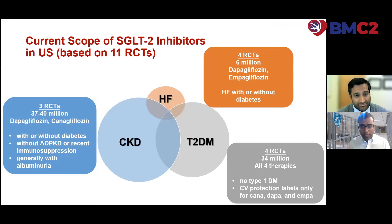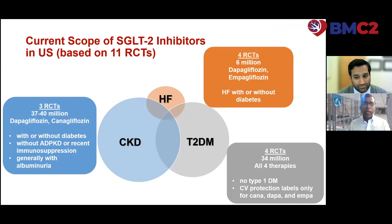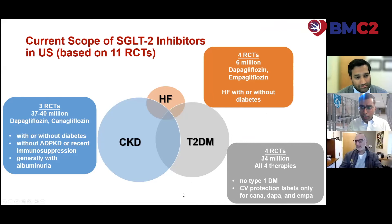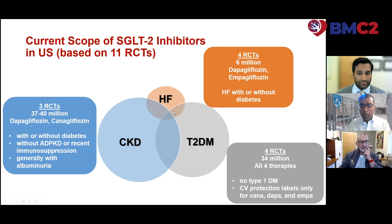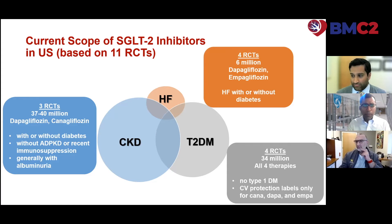This is the current landscape of SGLT2 inhibitors — 11 late-phase clinical trials have been conducted. While we started in type 2 diabetes, encompassing about 34 million Americans, indications have expanded to heart failure, encompassing about 6 million Americans, and chronic kidney disease, encompassing about 40 million Americans. While individual indications vary slightly by therapy, we've seen class effects across the efficacy spectrum.